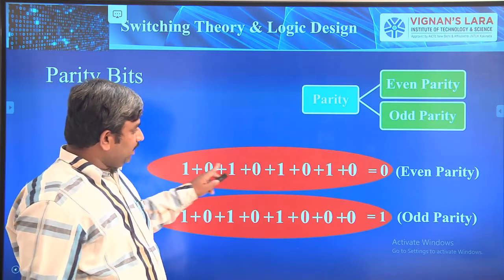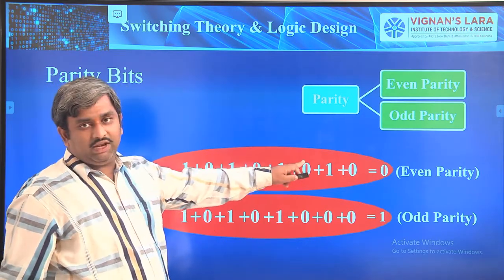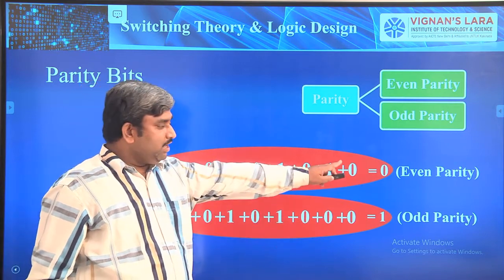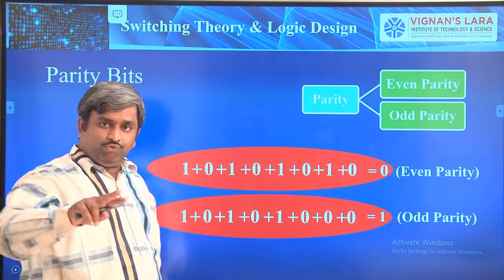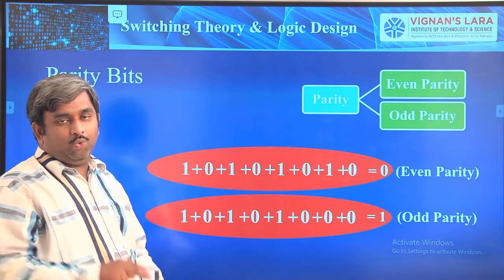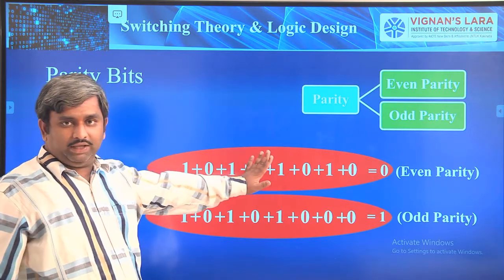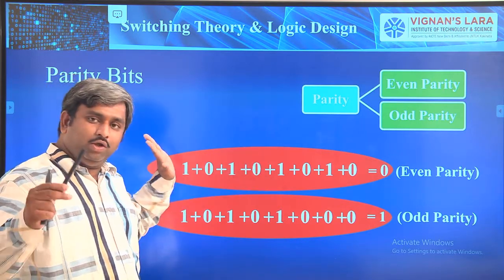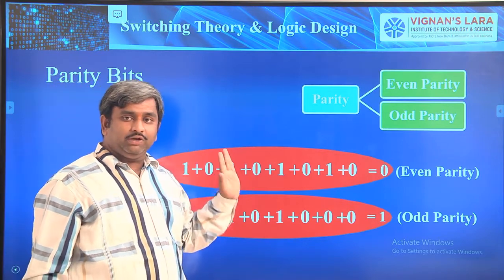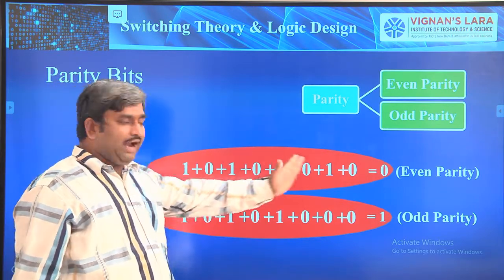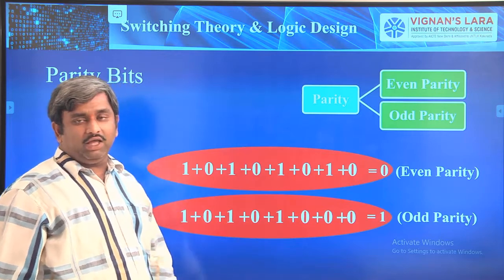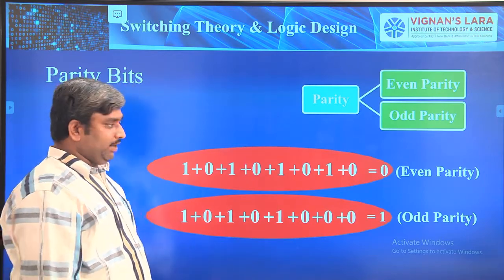So there are two ways of identifying even parity or odd parity. One is the general way of counting — that a human can understand. The second way is what a machine does: add all of the bits, and you will automatically get the even parity or odd parity result.